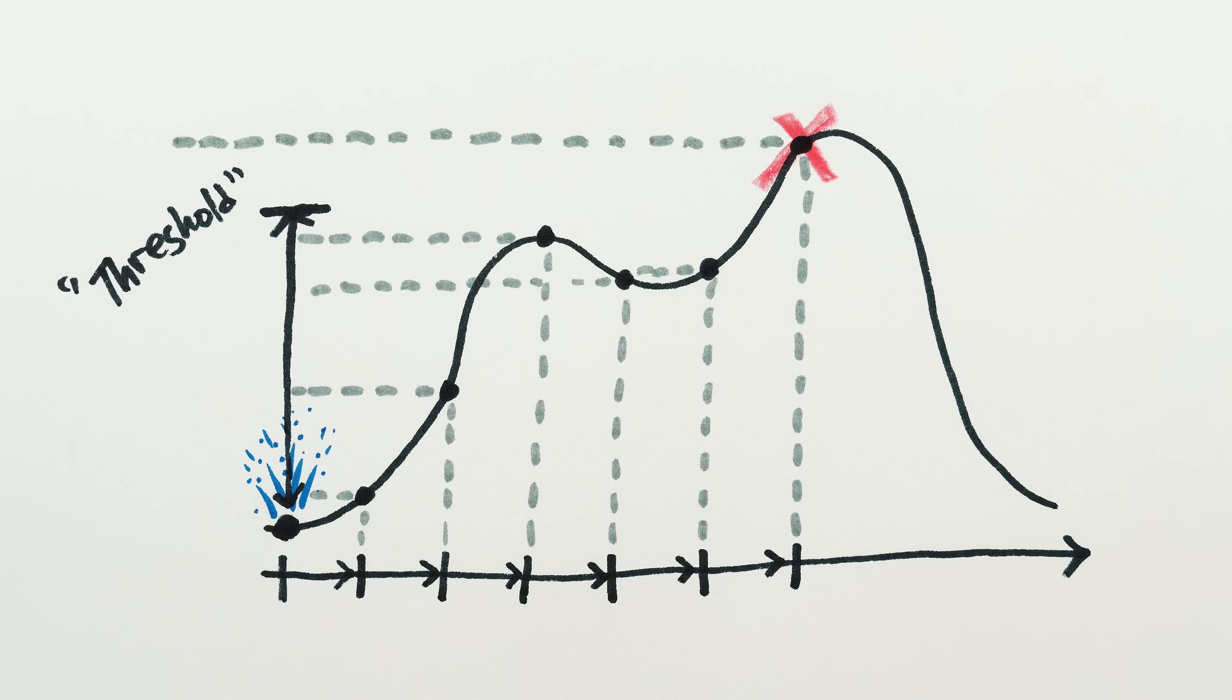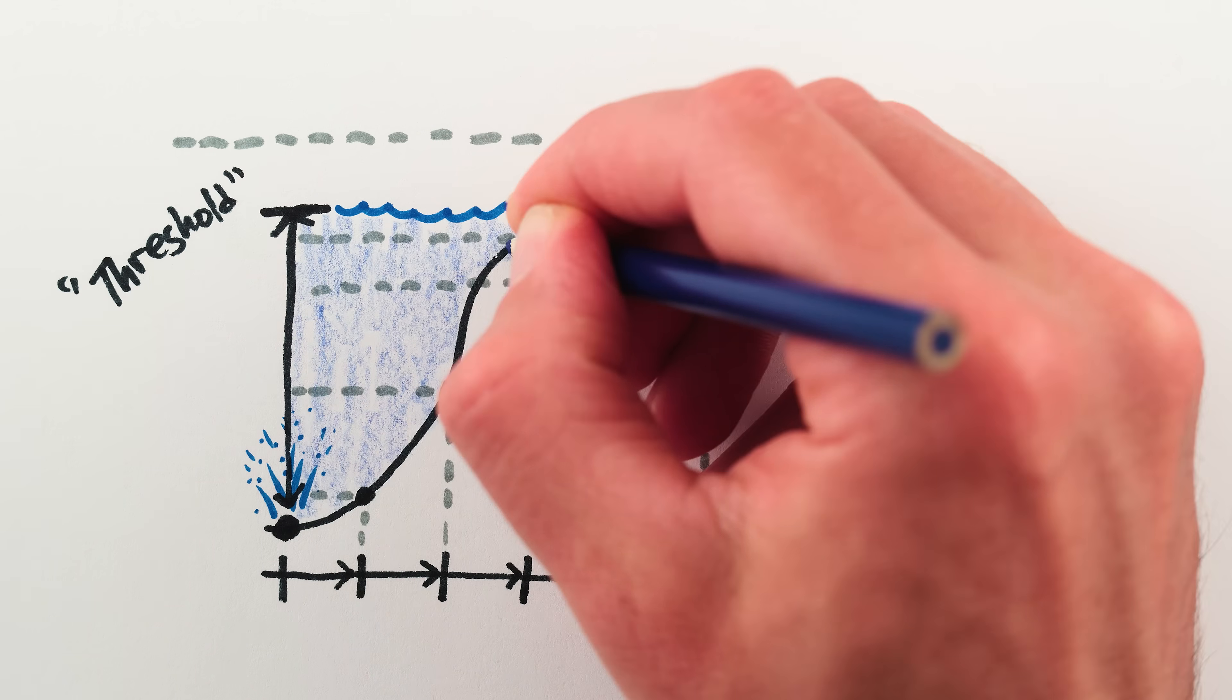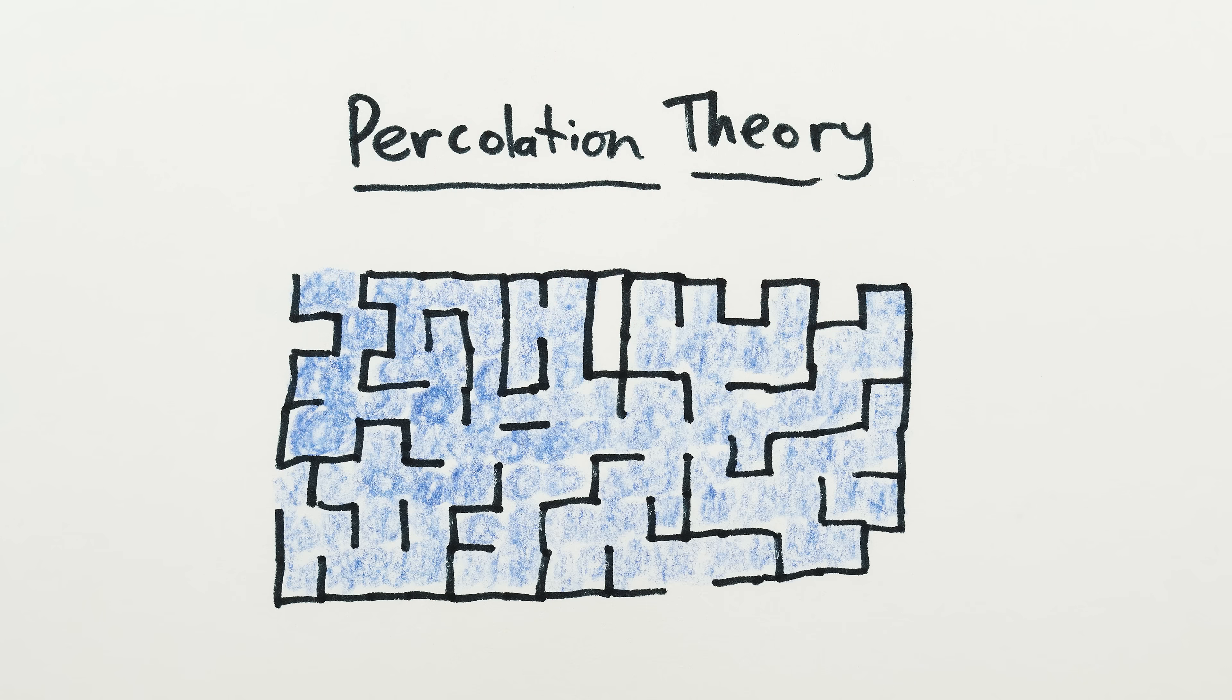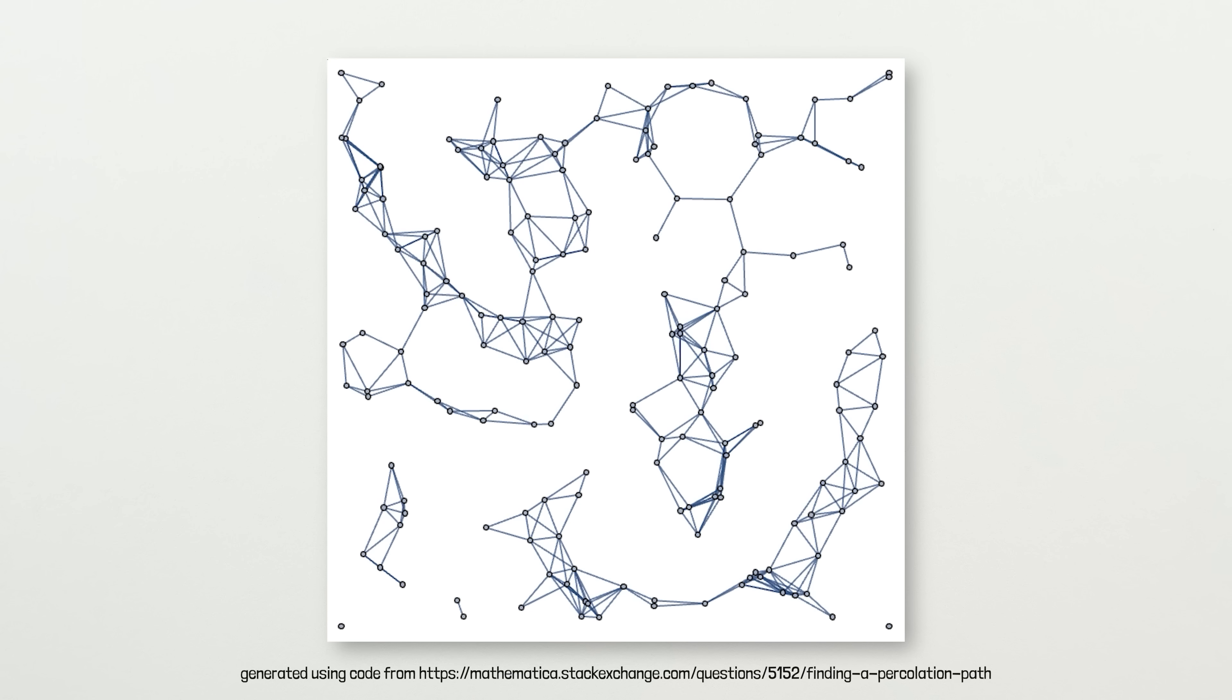Once the threshold is passed, the algorithm stops expanding in that direction, and any points that you've reached are considered flooded or filled. There's a whole field of physics and math called percolation theory that you can get into just by pondering the paint bucket tool.